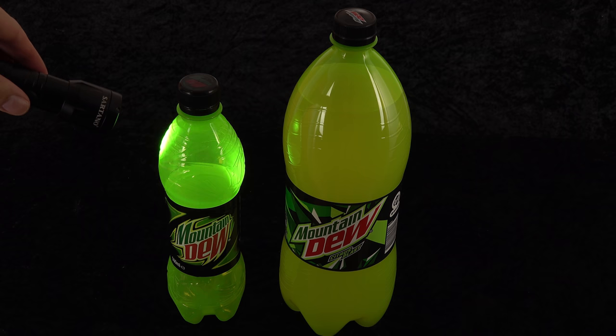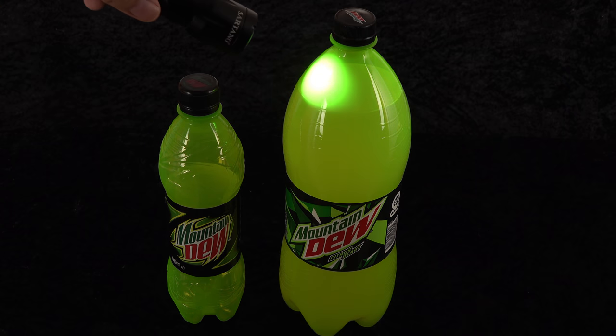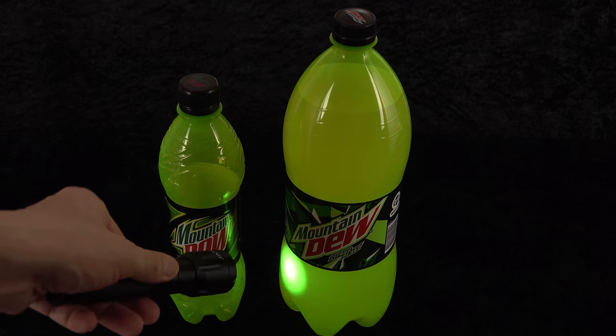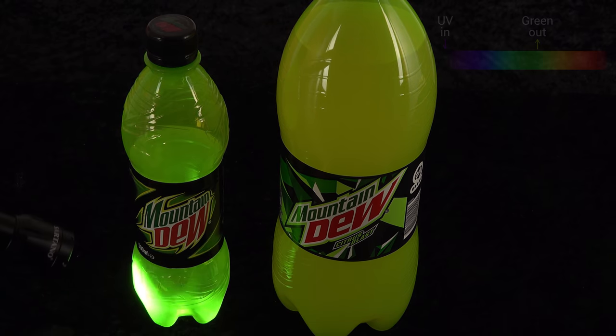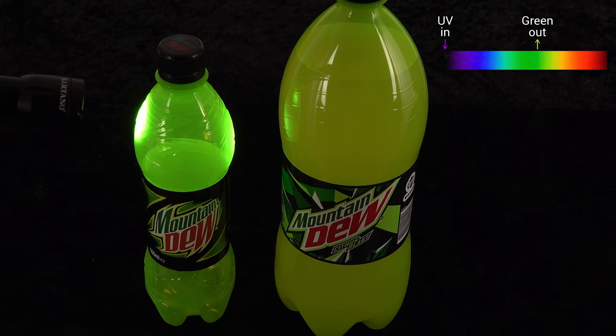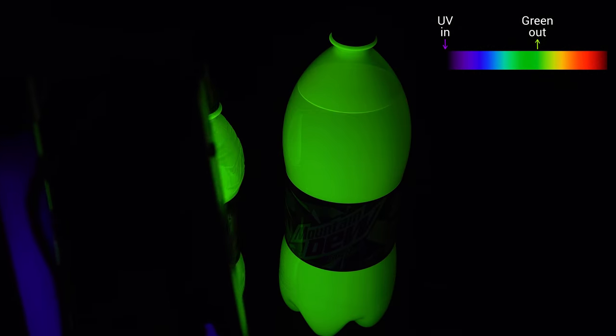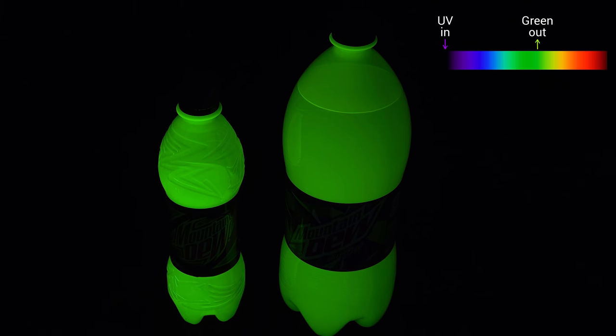When thinking of fluorescent drinks, this Mountain Dew seems like the most obvious candidate. The bottles fluoresce neon green when I point an ultraviolet flashlight at them. The ultraviolet light is converted to visible green light, a clear sign of fluorescence. The same happens with ultraviolet light from a black light.